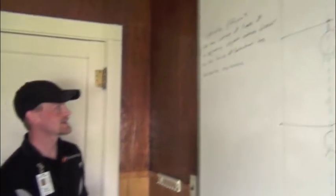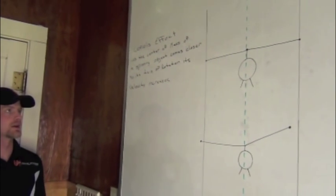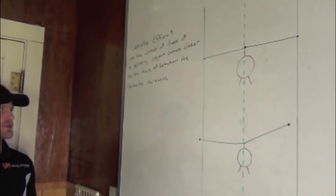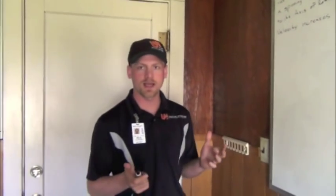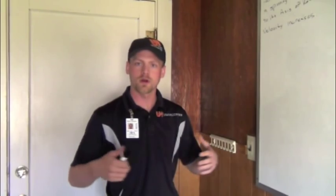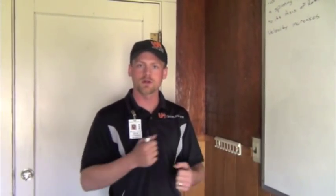Now Coriolis Effect states that as the center of mass of a spinning object comes closer to its axis of rotation, its velocity increases. I like to think about an ice skater doing a spin. When their arms are further away from their body, they are spinning relatively slow. As their arms come closer together, they speed up.